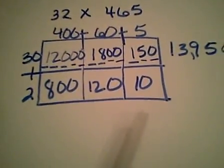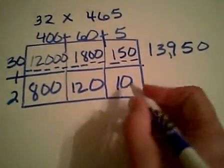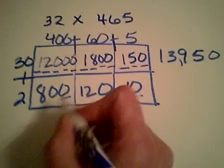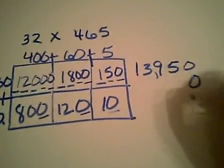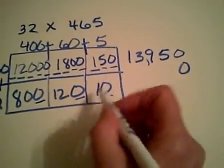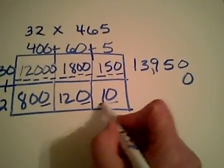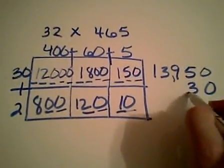Do the same thing for the second row. My ones place adds up to be zero. Making sure I line up my ones place together. My tens place adds up to be three. My hundreds place is nine.